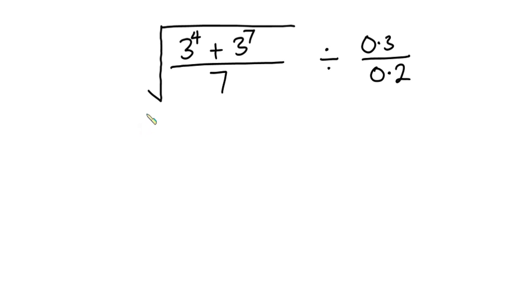Hello everyone. In this video we have this nice problem: the square root of three to the fourth power plus three to the seventh power, all divided by seven, and the whole thing is also divided by 0.3 over 0.2. We have to simplify this without using a calculator.